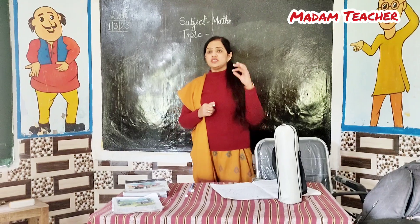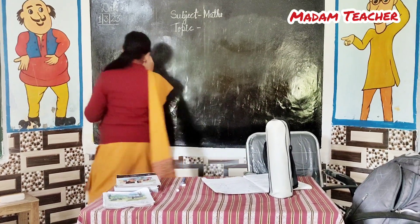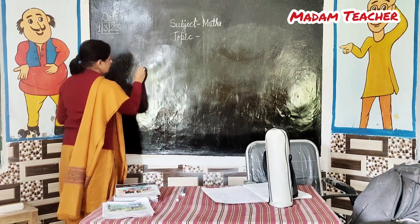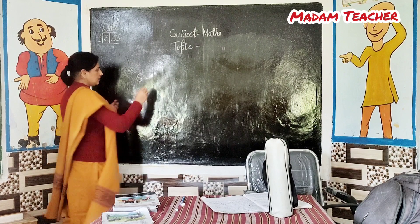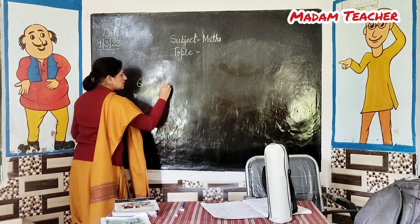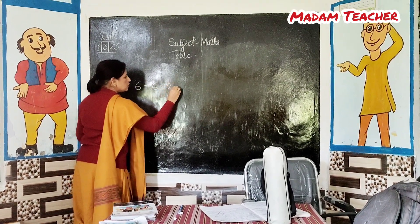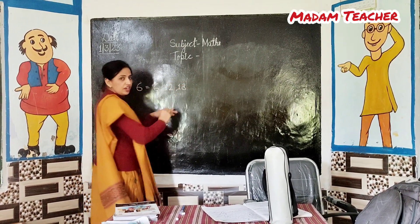You stand up. Table of 6 — speak loudly. 6 ones are 6. 6 twos are 12. 6 threes are 18.